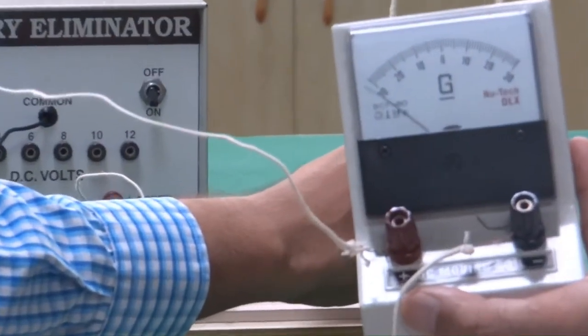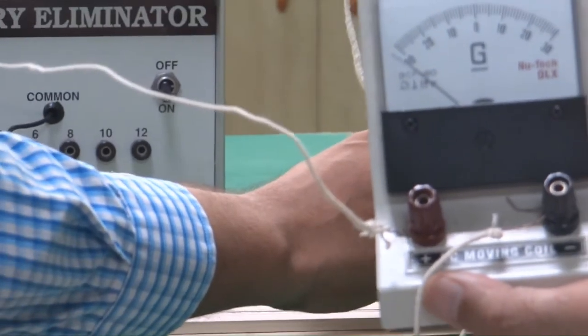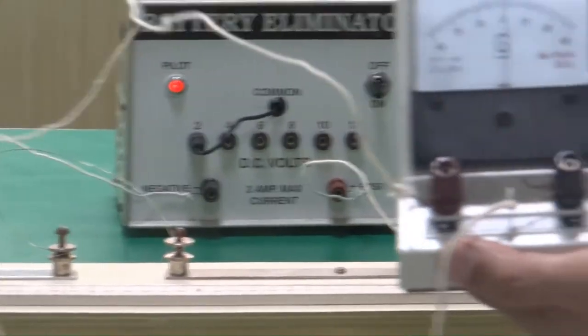And when I place it on the opposite end, the deflection is towards the left. It means that the deflection point would be somewhere in between.